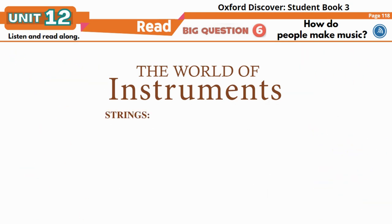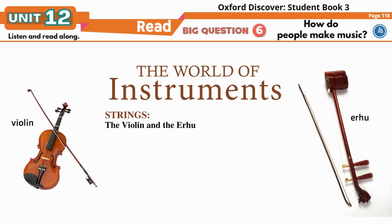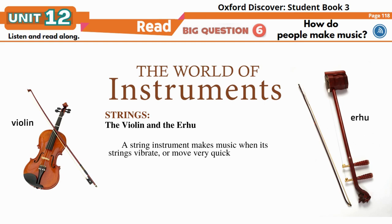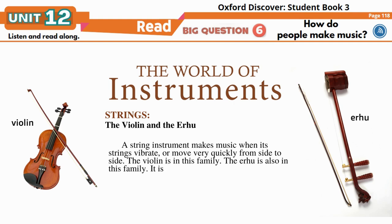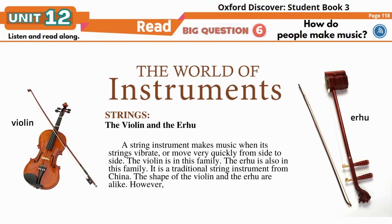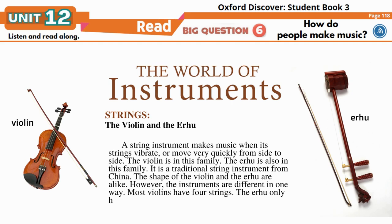Strings: the violin and the erhu. A string instrument makes music when its strings vibrate, or move very quickly from side to side. The violin is in this family. The erhu is also in this family — it is a traditional string instrument from China. The shape of the violin and the erhu are alike; however, they are different in one way: most violins have four strings, while the erhu only has two strings.